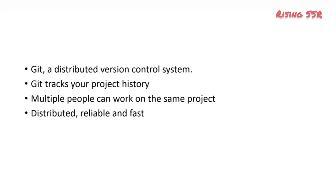In a centralized system, anyone who makes a change needs to be given access to the central location. In contrast, in a distributed system, developers can make changes to their own repositories without being granted write access. So managing access is easier in distributed systems.